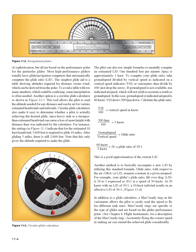Another option is a circular glide calculator, which allows the pilot to read the altitude needed for any distance and can be set for various estimated headwinds and tailwinds. Circular glide calculators also make it easy to determine whether the pilot is actually achieving the desired glide. For instance, the settings in Figure 11-3 indicate that for an estimated 10-knot headwind, 3,600 feet is required to glide 18 miles. After gliding 5 miles, there is still 2,600 feet remaining.